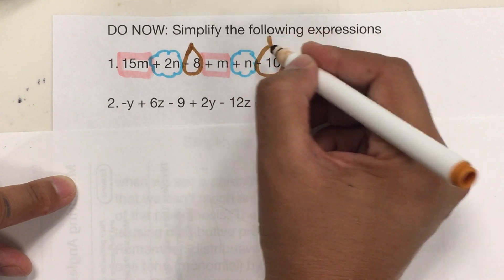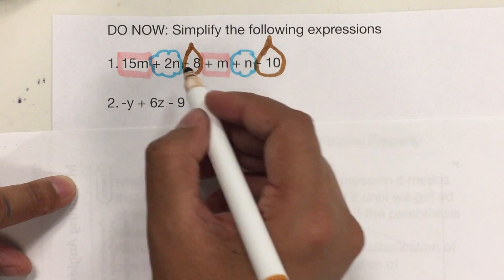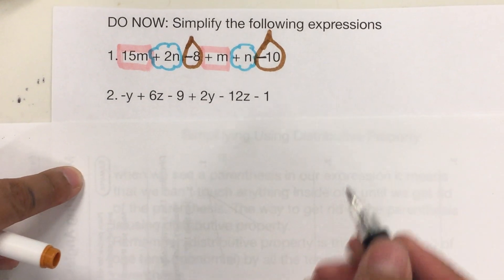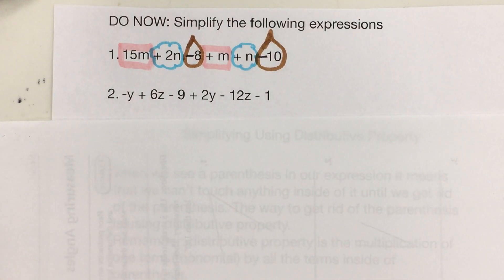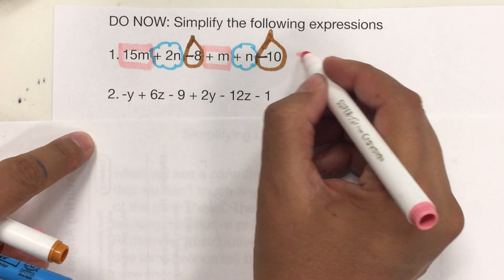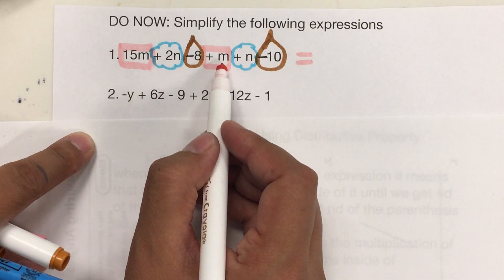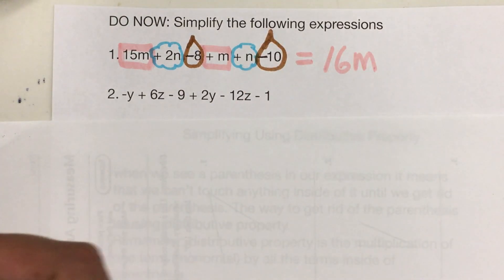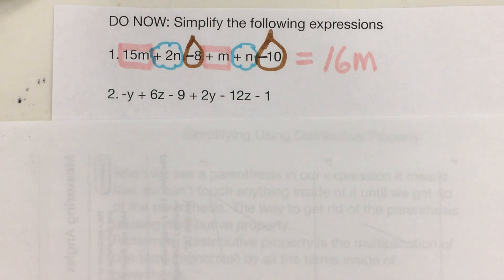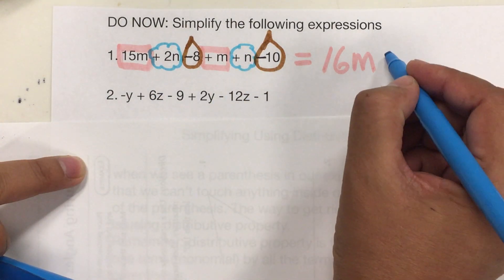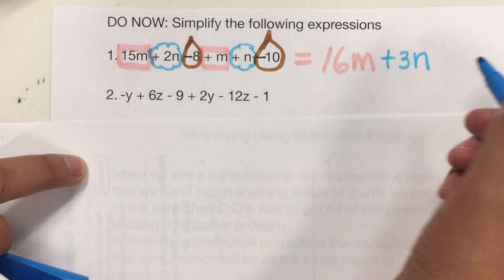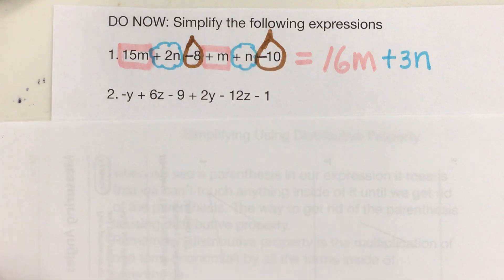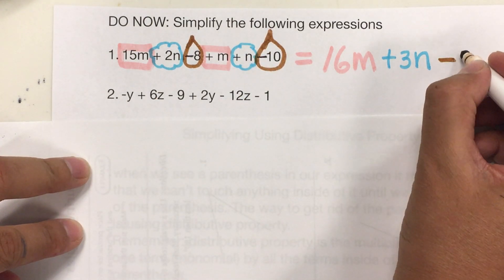Negative 8 and negative 10. They are like terms not because they have a negative, but because they don't have a variable. So the answer will be: if I have 15M and M, that's a total of 16M. For the N, 2N plus N is plus 3N.